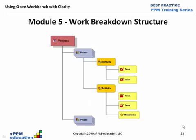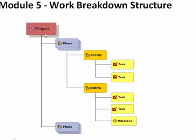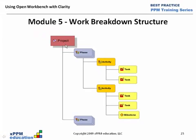Beginning lesson one, we first want to look at the concept of the work breakdown structure. The work breakdown structure is basically a hierarchical arrangement of the work we're going to do. This picture here is a graphical image of what a work breakdown structure looks like, beginning at the project on top — the overall context of what we're working in — and then breaking down into phases, activities, tasks, and milestones.